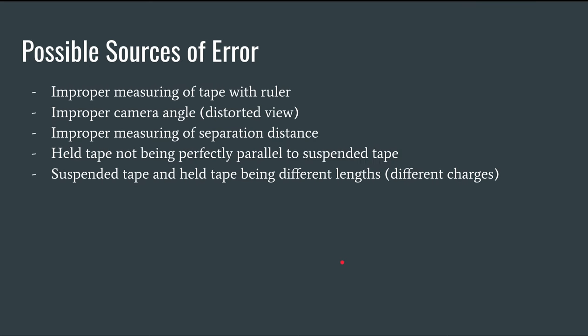Some possible sources of error in this lab are improper measuring of the tape with the ruler, improper camera angle which would give a distorted view, improper measuring of separation distances, the held tape not being perfectly parallel to the suspended tape, and the suspended tape and the held tape being different lengths, which would lead to different overall charges.